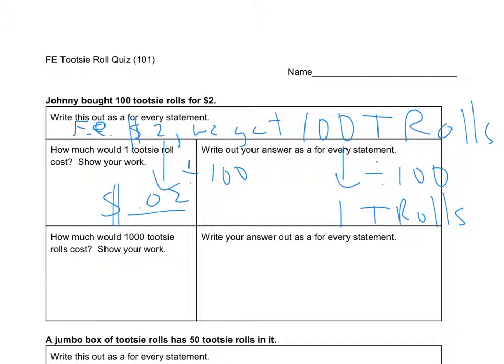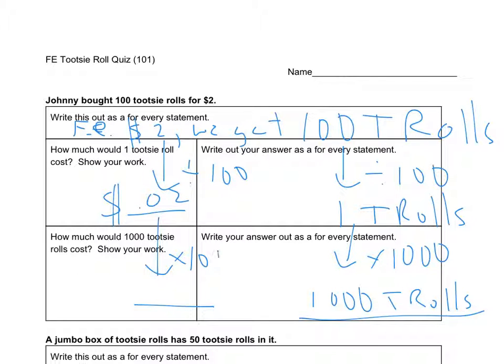And then they say, how much would 1,000 Tootsie Rolls cost? Well, this time I am multiplying by 1,000. So that gives me 1,000 Tootsie Rolls. Which means that I have to multiply this one by 1,000. So that'll be $20.